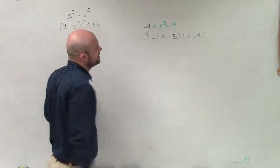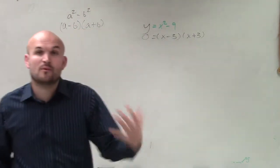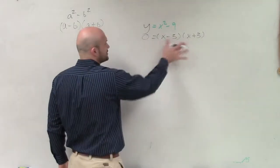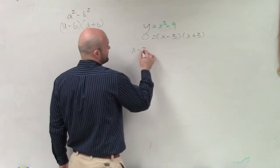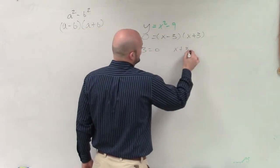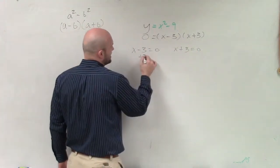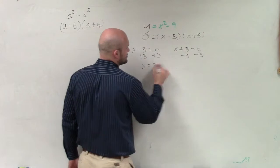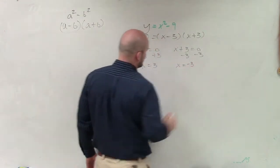And then, when we're solving by factoring, we want to make sure it's set equal to 0. Now we apply the zero product property. So I have x - 3 = 0, and x + 3 = 0. And then I solve for x on each one. Therefore, I have x = 3 and x = -3.